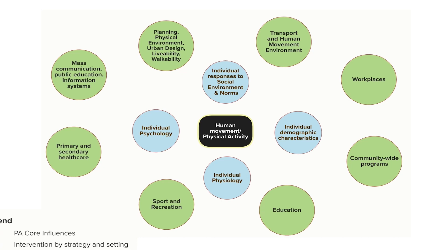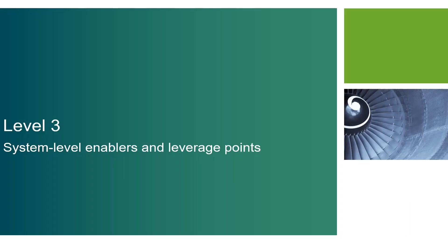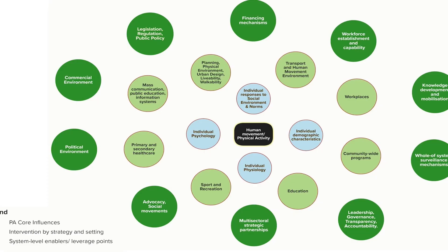So what we've got so far is an inner layer of core influences on physical activity and an outer layer of intervention points by strategy and setting. We're now going to add another layer to show system level enablers and leverage points. Here we see the addition of 10 elements in dark green. These enablers and leverage points can operate across the system rather than in a single setting or through one specific strategy. They include legislation and regulation, workforce establishment and capability, whole of system surveillance, as well as leadership, governance, and multi-sectoral partnerships. These leverage points are also connected to each other, as you will see later.